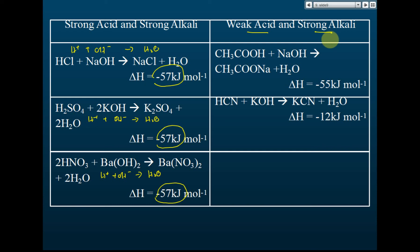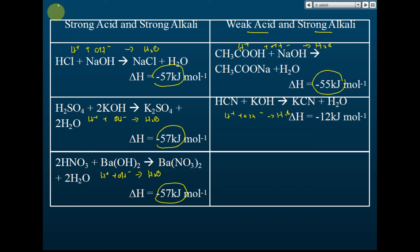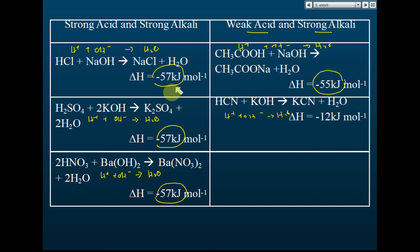Now for weak acid and strong alkali, we find that the heat of neutralization is lower than 57 kilojoules per mole, even though the reaction is still the same — hydrogen ions react with hydroxide ions to produce water. Suppose we should get 57, but we only get 55, or even as low as 12 kilojoules per mole. The heat of neutralization between weak acid and strong alkali is always lower than 57 kilojoules per mole.